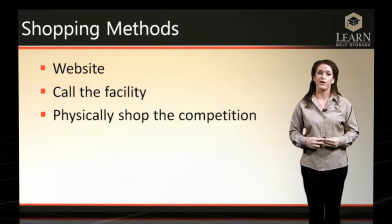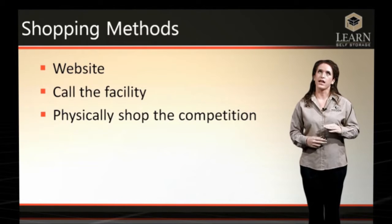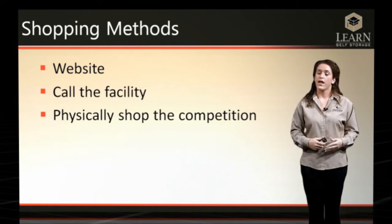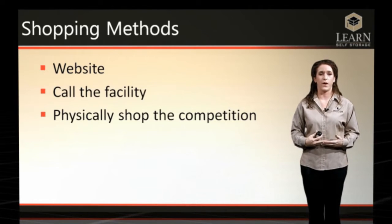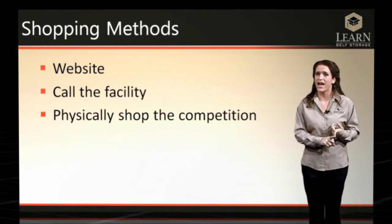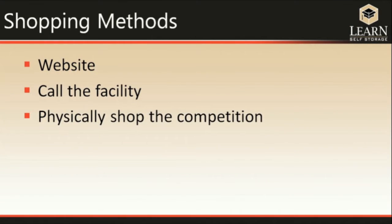Now we're going to review the different shopping methods you can use. The first and easiest way to shop a competitor is to go on their website, if they have one. Sometimes a competitor's website lists how many units they have left in each size, the price, and security details — everything you need. Other times you may have to dig a little more and possibly call the facility.